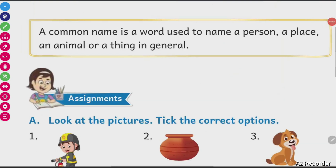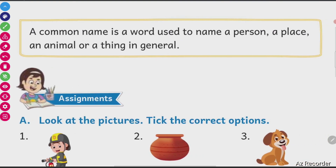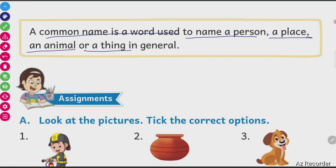A common name is a word used to name a person, a place, an animal or a thing. Because there are different types of persons — some people are shopkeepers, some are vendors, some are policemen, some are doctors — we use these common names to call them and to identify them.